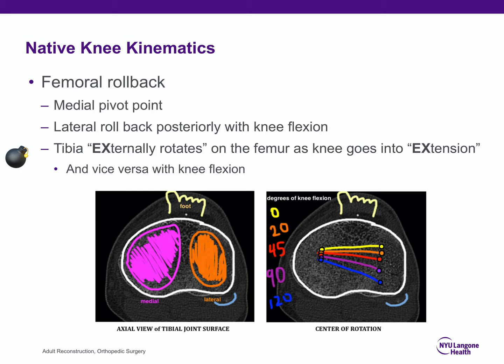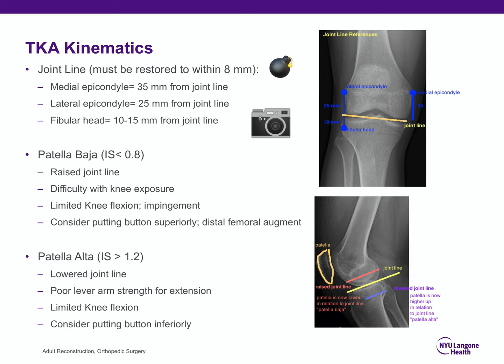For total knee kinematics, understand the joint line: 35 mm from the medial epicondyle, 25 mm from the lateral epicondyle, and 10–15 mm from the fibular head — commit that to memory. A tested question: when performing a total knee, you want to restore the joint line to within 8 mm. Patella baja and alta are evaluated on lateral x-ray with Insall-Salvati ratios. With baja, you've raised the joint line and will have difficulty exposing the knee and limited knee flexion.